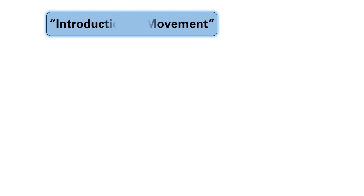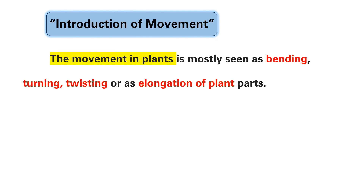Introduction of movement. Movement in plants is mostly seen as bending, turning, twisting, or as elongation of a plant part. These changes occur in the spatial orientation of the structure, providing organs or body parts with directional responses.